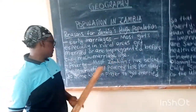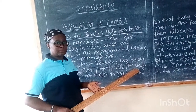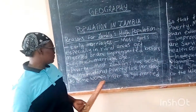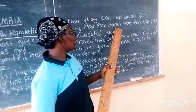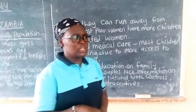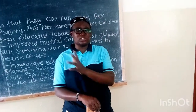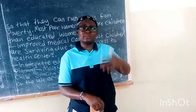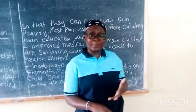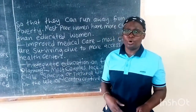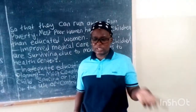Another reason is poverty. Most Zambians live below the international poverty line per day, failing even to have three decent meals a day. Some women prefer to get married in order to run away from poverty, and most poor women have more children than those who are educated. But running away from poverty into marriage is just adding poverty to another poverty — it doesn't solve the problem. The best way is to go back to school or start a business.